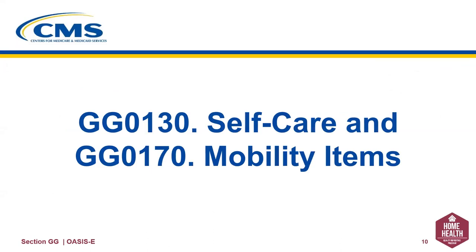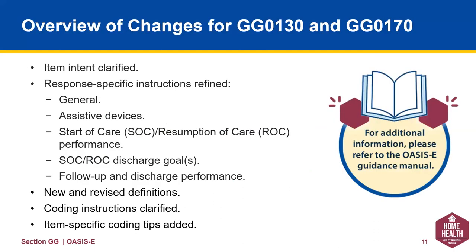Let's move on to this section where we will summarize the basic guidance and approaches used to complete Section GG Self-Care and Mobility items. In this section, we look at the changes that have been made to 130 and 170. The item intent has been clarified. Response-specific instructions have been refined in general, assistive devices, SOC and ROC performance, SOC and ROC discharge goals, follow-up and discharge performance. There are new and revised definitions, your coding instructions are clarified, and some item-specific coding tips have been added.